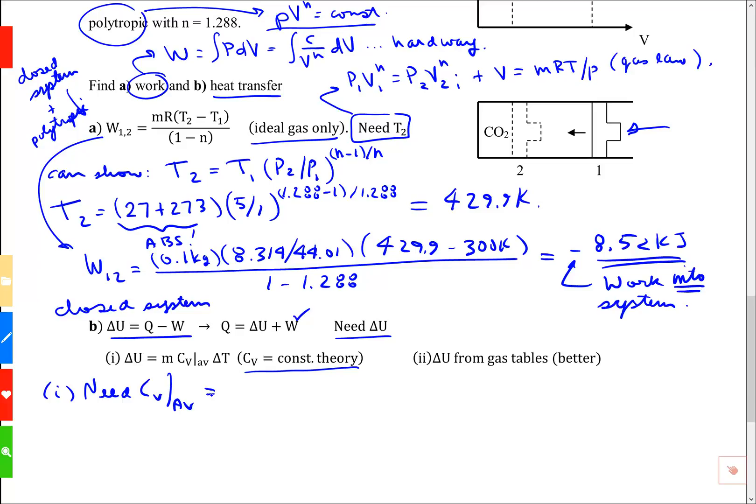We need Cv average. What I'm going to do is take Cv at the final temperature, 429.9, and add Cv at the initial temperature of 300, and divide by 2. Take an average of the Cvs at the temperatures that I know. And we need a table.